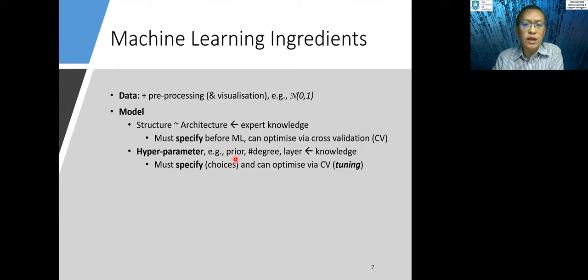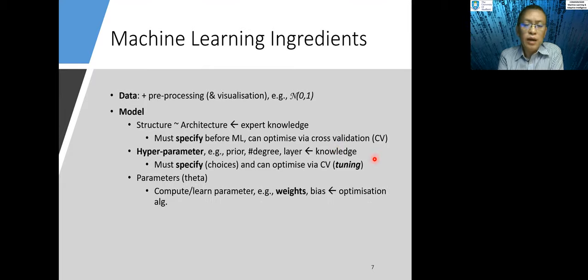And for example, some prior knowledge has a number of degrees in polynomial basis and the number of layers in neural networks. And you need some knowledge to specify the range of hyperparameters. And lastly, in machine learning, what we are learning are the model parameters. And that's commonly represented using theta. And we need to build a model to compute or to learn the parameters such as weights and bias in regression.